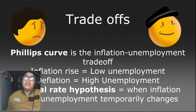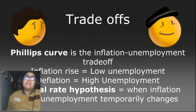For trade-offs, we're going to focus on the Phillips curve. This is the negative or inverse relationship between inflation and unemployment. When inflation rises, there's lower unemployment, and vice versa.